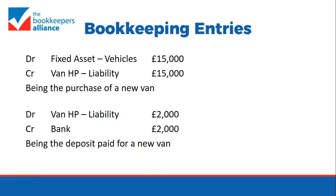Then we need to do the entry for the deposit that he's paid. We debit the Van HP liability account £2,000 and credit the bank — assuming that's how he paid the deposit — for £2,000.